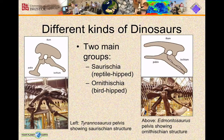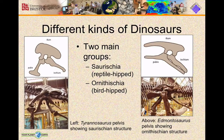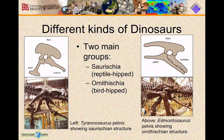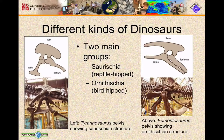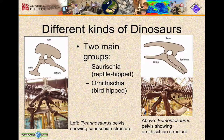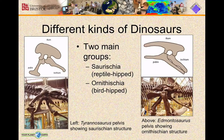You can see from the two diagrams that the arrangement of the pubis and the ischium is different in the saurischians from that in the ornithischians. Now there are some issues with this classification system, and fairly recently a new system has been proposed, but that perhaps goes beyond the scope of this video.